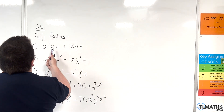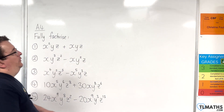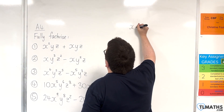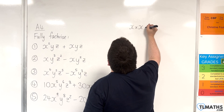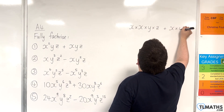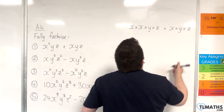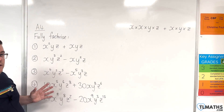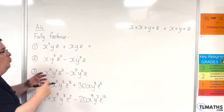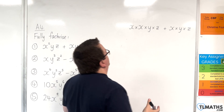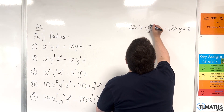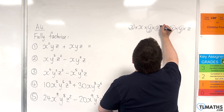We have x squared y z plus x y z. You may want to write it out, initially at least, as x times x times y times z, plus x times y times z — writing it out showing the factors. Because then it's very easy to spot which factors are common to both. They both have an x, they both have y, and they both have z.